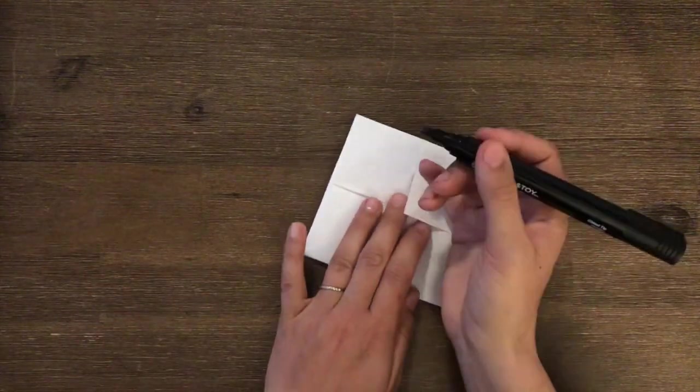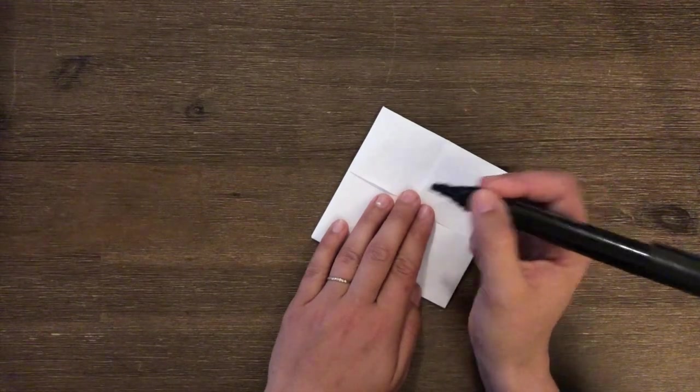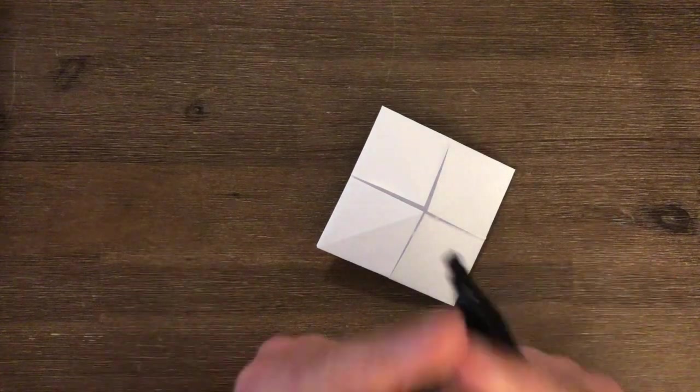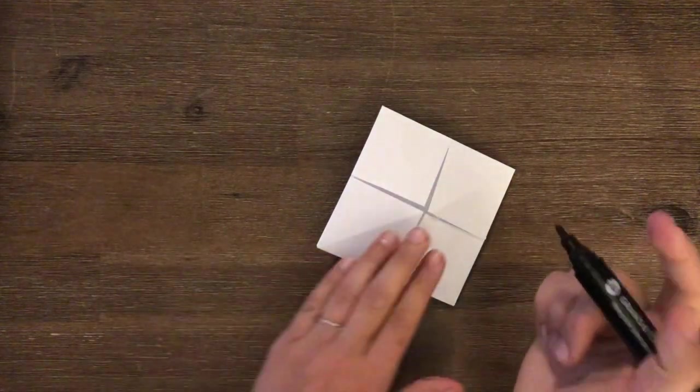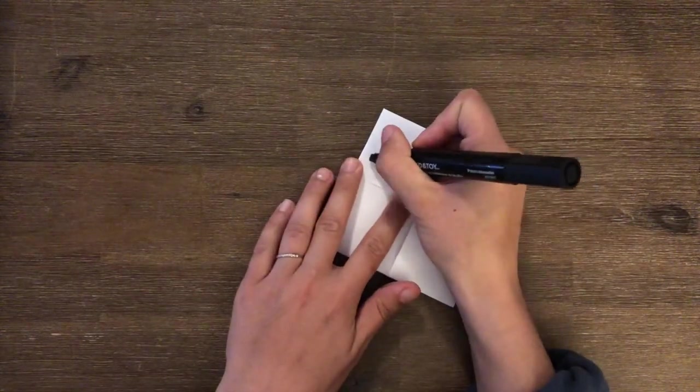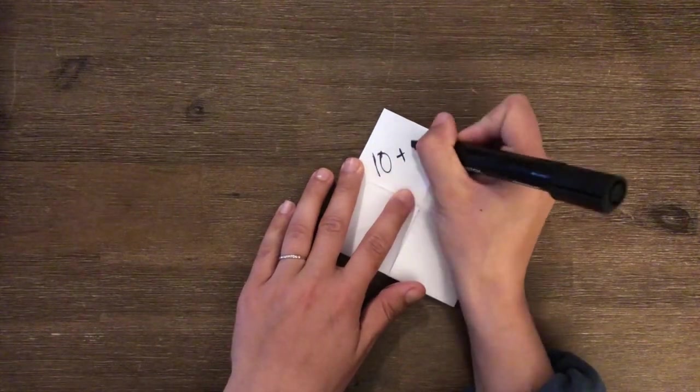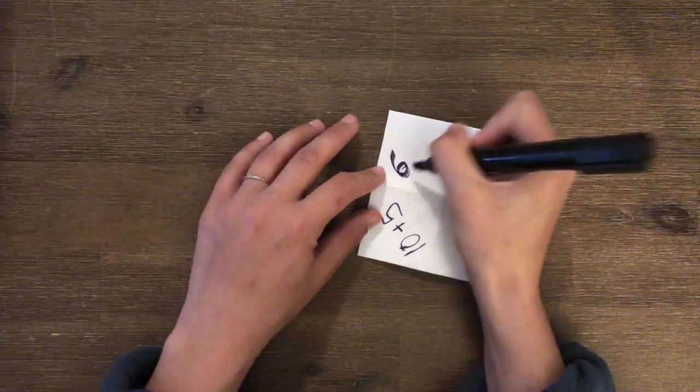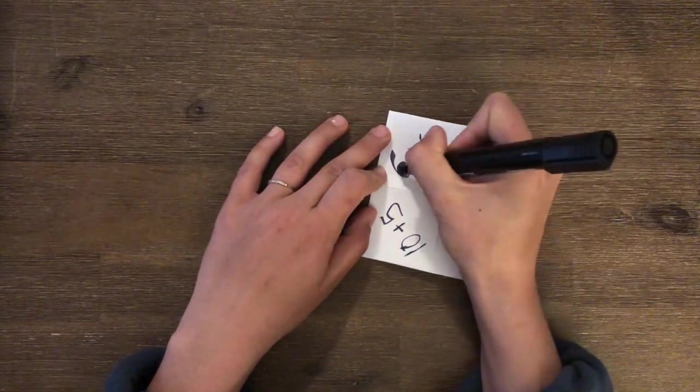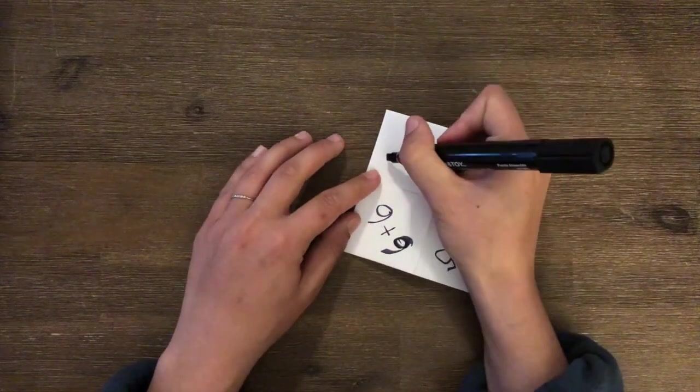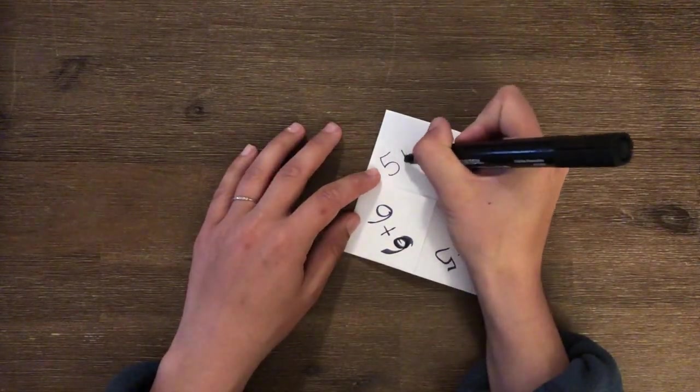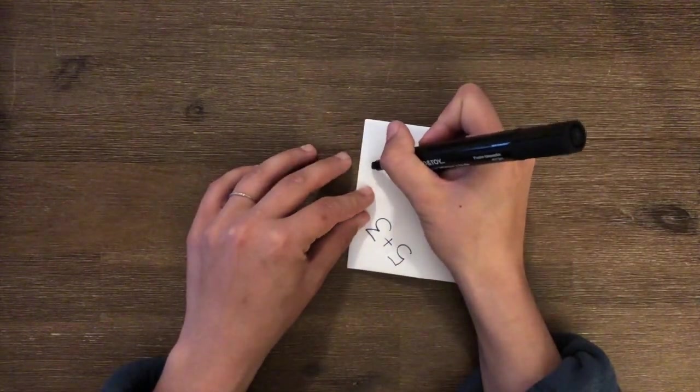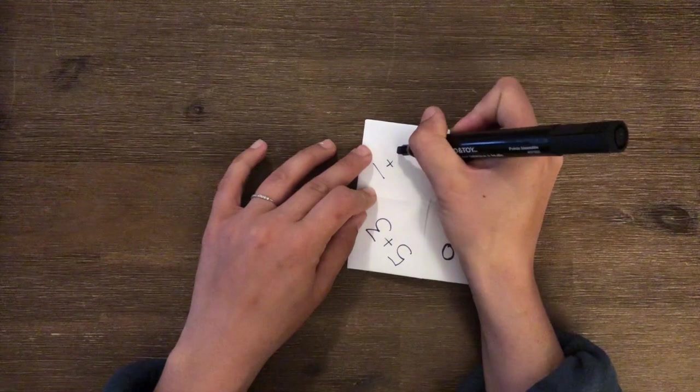Because all the number sentences, all the equations that you're going to write here, the answer to that equation is going to be the number that you decide to do when you're opening and closing your fortune teller. So I'm going to do 10 plus 5 on one. I'm going to do 6 plus 6. I'm going to do 5 plus 3. And I'm going to do 1 plus 9.